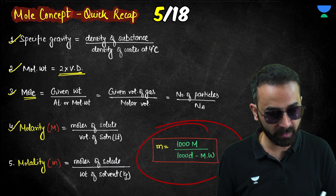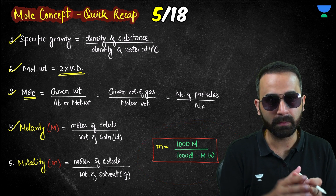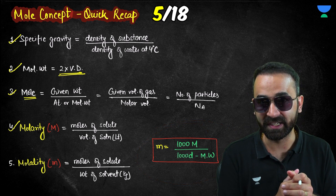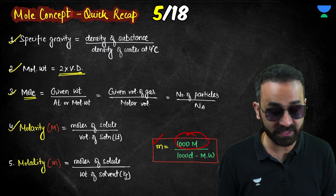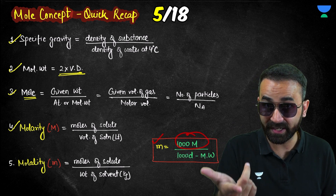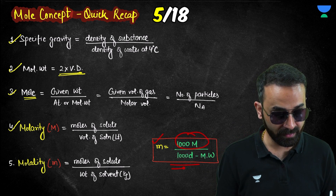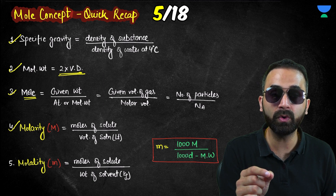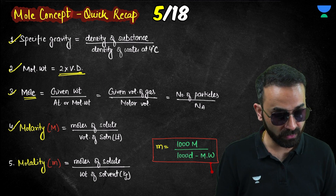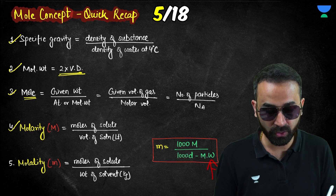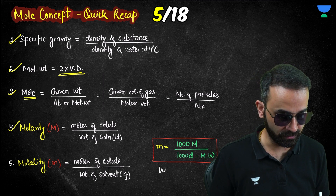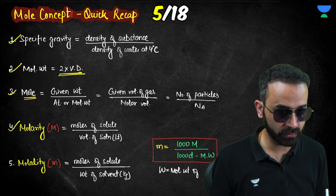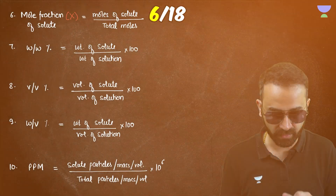Here is the formula to convert molarity to molality: molality equals 1000 times molarity, divided by (1000 times density minus molarity times the molecular weight of solute). Here W refers to the molecular weight of the solute.